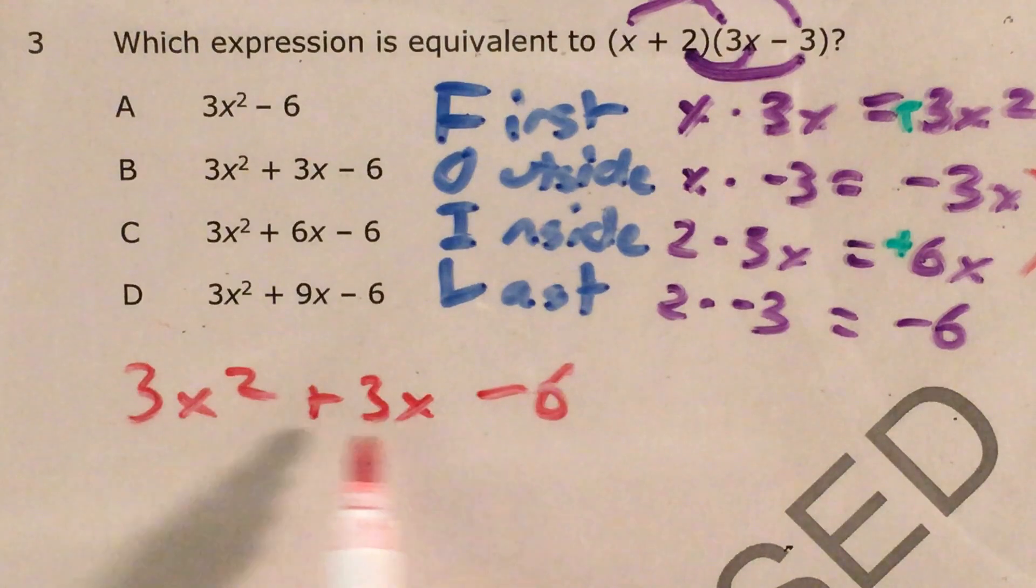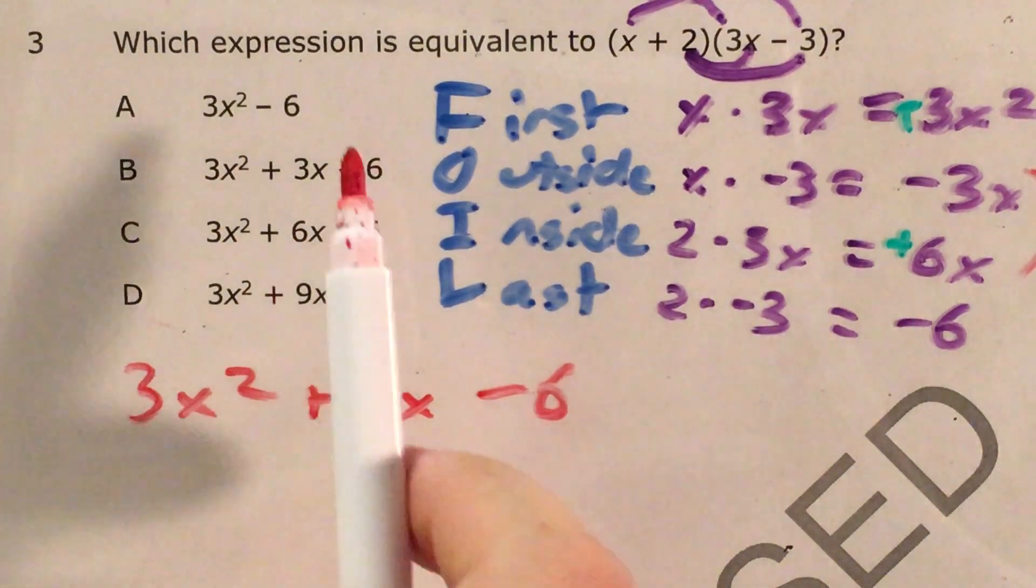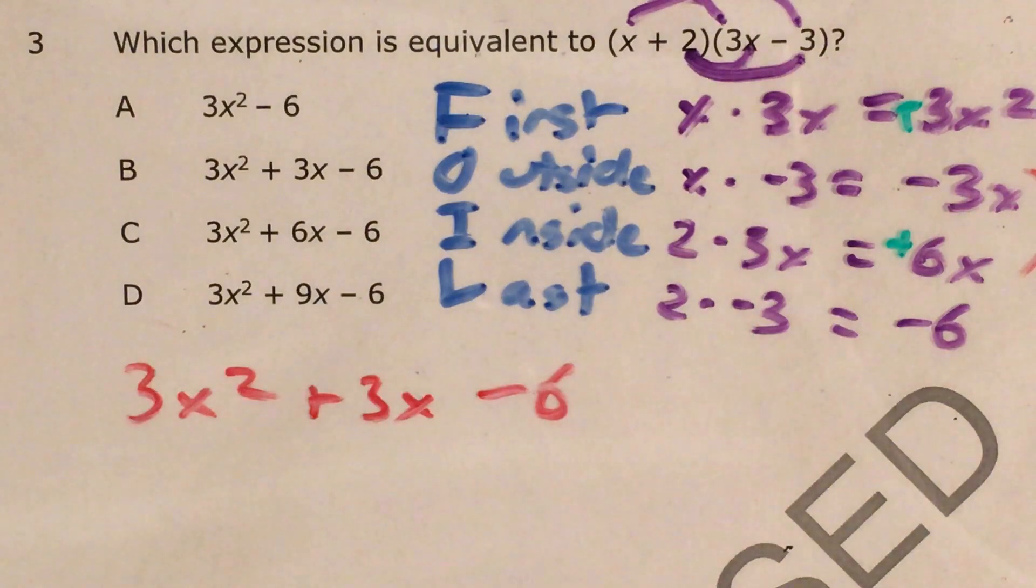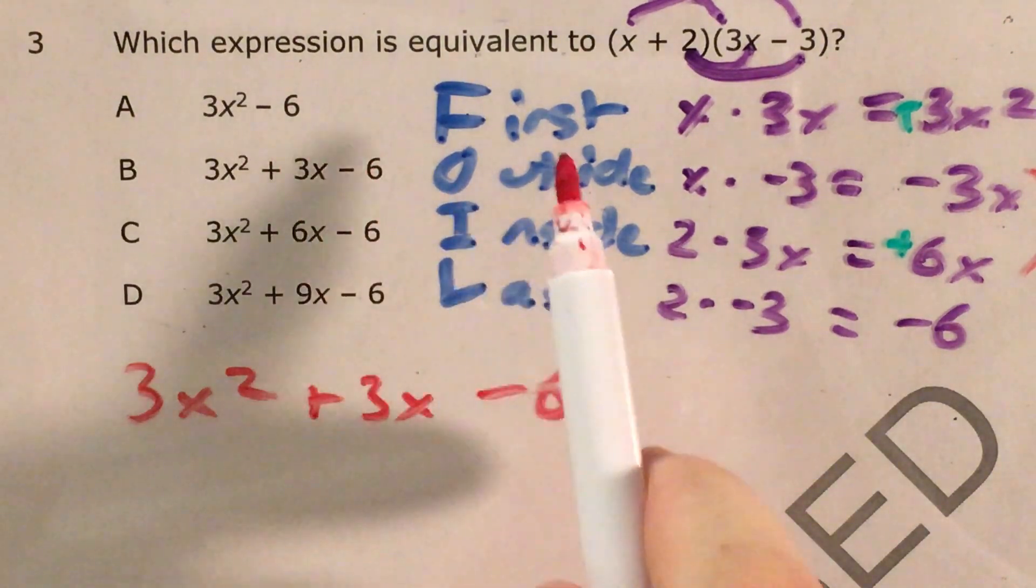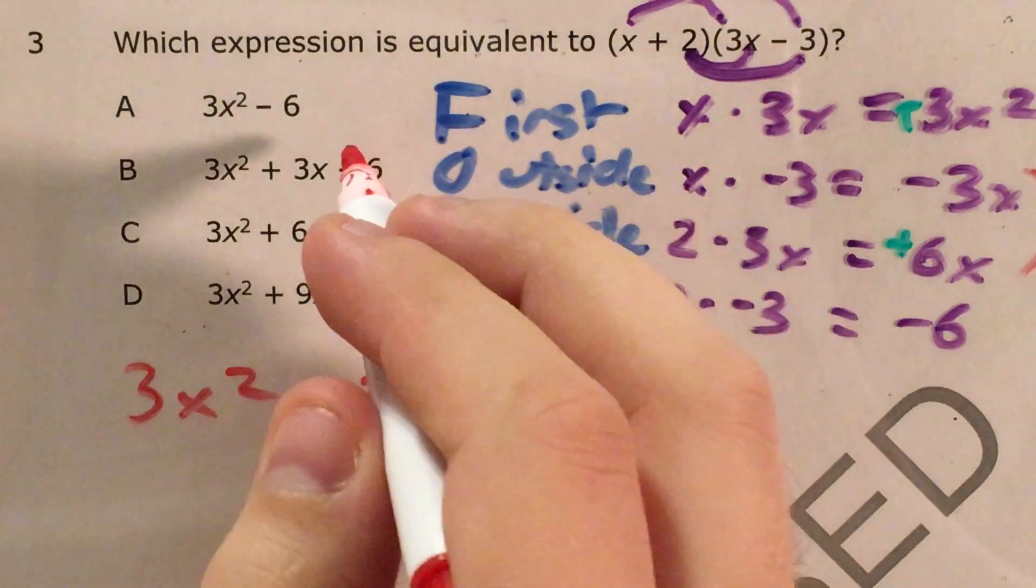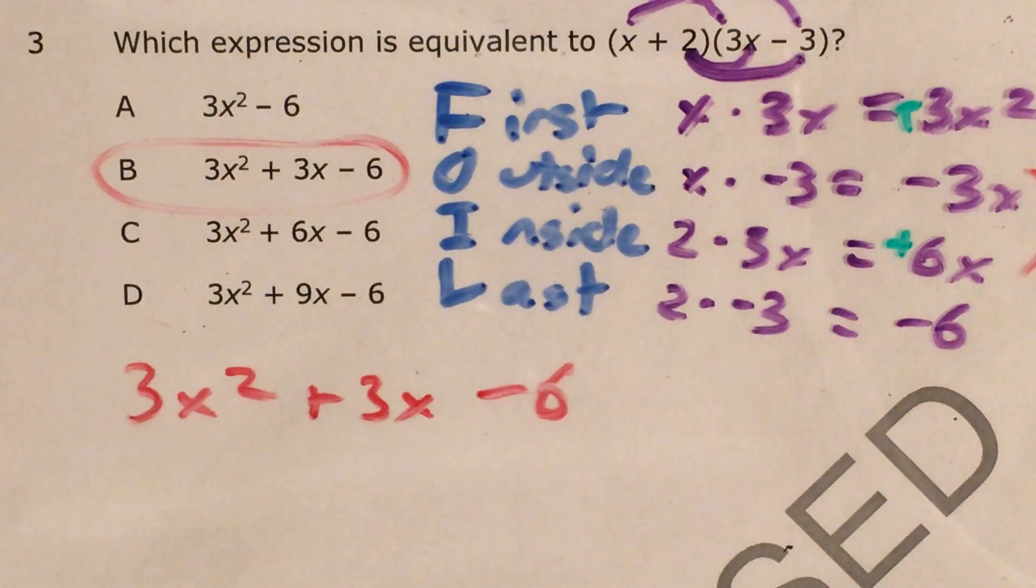And now I just have to look for an answer choice that matches this foiled expression. And that is going to be choice B. 3x squared plus 3x minus 6 is the equivalent expression to (x + 2)(3x - 3), and we got there by foiling.